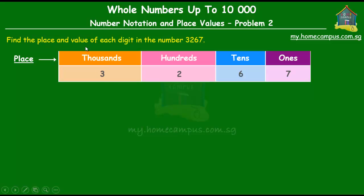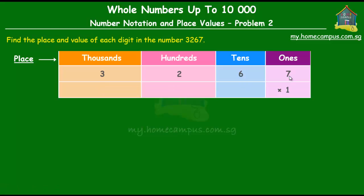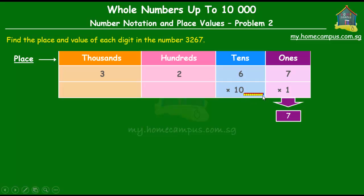Now, how about value? Since 7 is in the ones place, what it means is there are seven ones — those little blocks. So the value of the digit 7 in 3267 is 7. Now, 6 is in the tens place, so what it means is there are six tens — the neatly stacked bar of ten ones. So the value of 6 in this number is equal to 6 times 10, or 60.